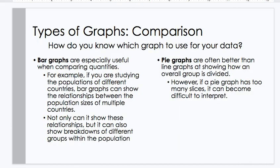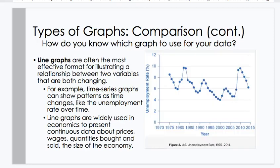Types of graphs comparisons, how do you know which graph to use for your data? Bar graphs are especially useful when comparing quantities. For example, if you're studying the populations of different countries, bar graphs can show the relationship between the population sizes of multiple countries. Not only can it show these relationships, but it can also show breakdowns of different groups within the population. Pie graphs are often better than line graphs at showing how an overall group is divided. However, if a pie graph has too many slices, it becomes difficult to interpret.